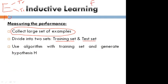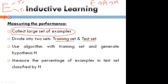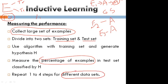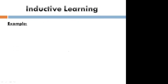Use the algorithm on those examples. After applying the algorithm you will generate the hypothesis h. Measure the percentage of examples in the hypothesis — how many examples are satisfied, like six or five. Then repeat all these steps for different examples and different data sets — example one, example two, example three — applying the same algorithm each time.